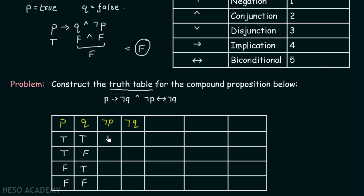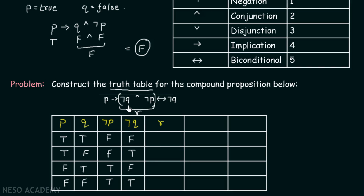As P is true, not P becomes false for the first two rows; and false for the remaining gives true. For not Q: true gives false, false gives true, true gives false, false gives true. Since conjunction has higher precedence than implication and biconditional, we calculate not Q and not P first, calling it R. False and false is false, true and false is false, false and true is false, true and true is true.